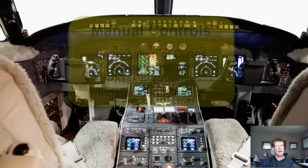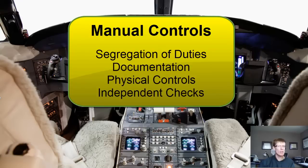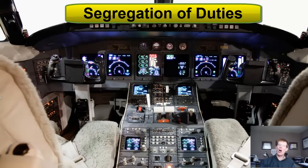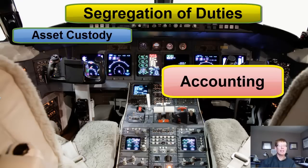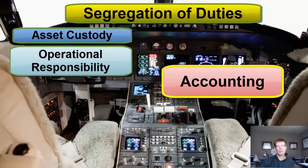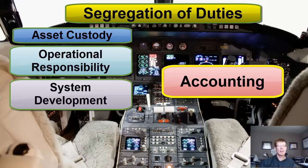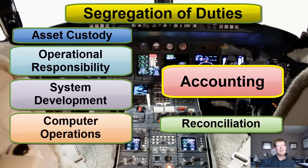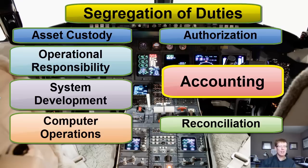Manual controls fall into a number of broad categories: segregation of duties, documentation, physical controls, and independent checks. Segregation of duties is one of those fundamental internal control principles, which broadly states that if we can design job positions such that one person cannot control a transaction in its entirety, then it's more likely to prevent and detect an error or a fraud from happening. The golden rules are: segregate the custody of an asset from its accounting; segregate operational responsibility from the accounting; segregate systems development from the accounting; segregate computer operations from accounting; segregate reconciliation and independent checking from the accounting; and segregate the authorization of transactions from the custody of assets.